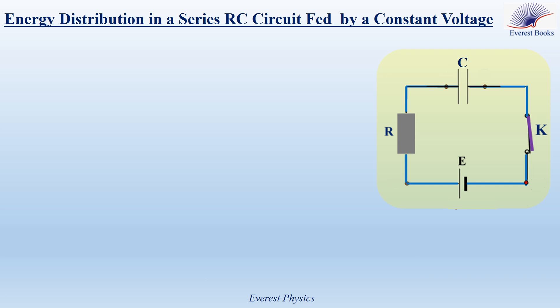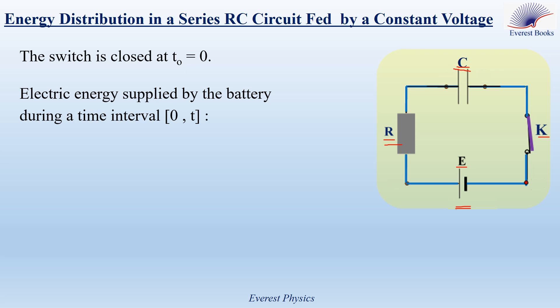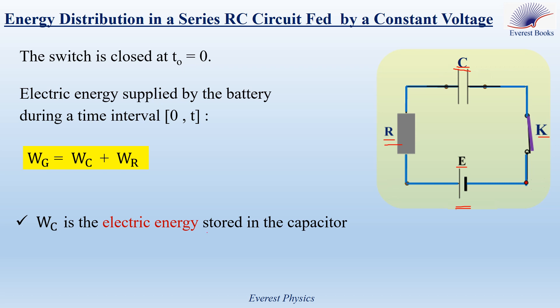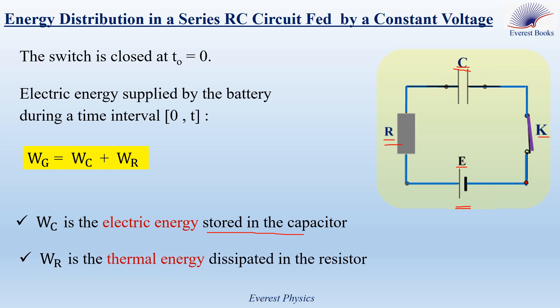Let's explain the energy distribution in a series RC circuit fed by a constant voltage. Consider the circuit: we have an ideal battery of electromotive force E, a resistor of resistance R, an uncharged capacitor of capacitance C, and a switch K. The switch is closed at time zero and the capacitor begins to charge. During the charging of the capacitor, the battery supplies electric energy to the resistor and the capacitor. The electric energy supplied by the battery during a time interval zero to T within the charging phase is given by: Wg = Wc + Wr, where Wc is the electric energy stored in the capacitor and Wr is the thermal energy dissipated in the resistor during this time.